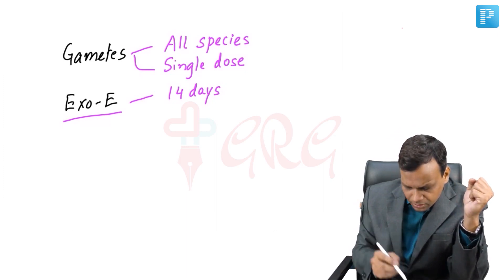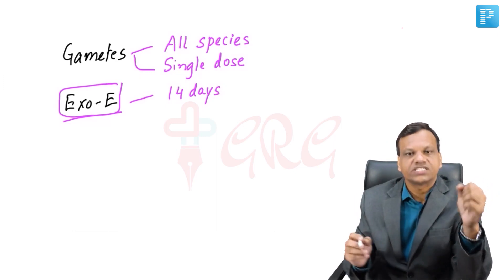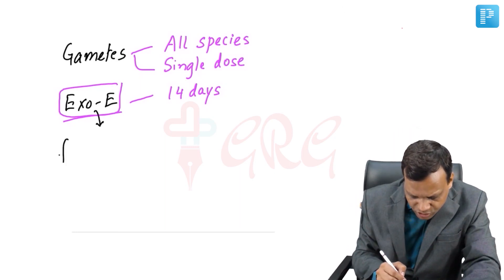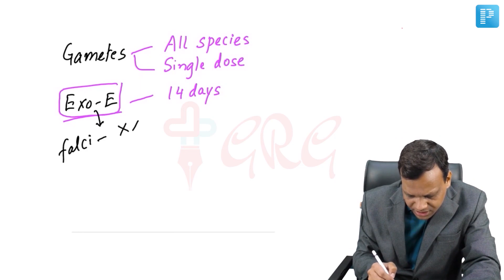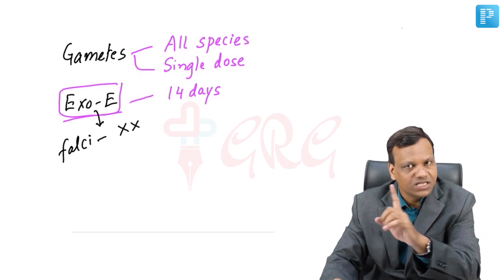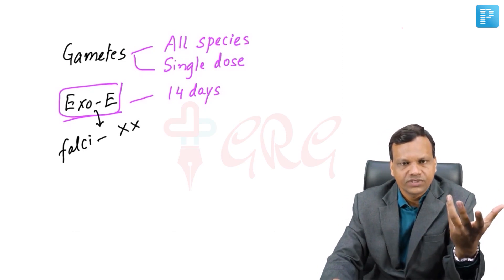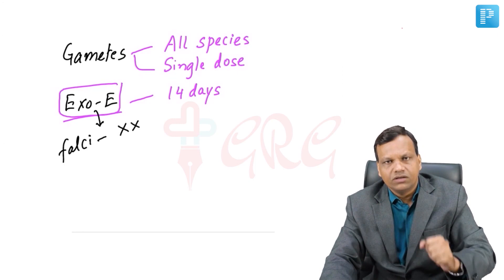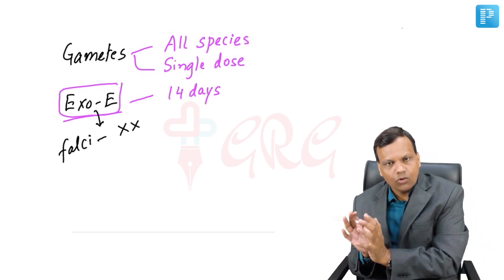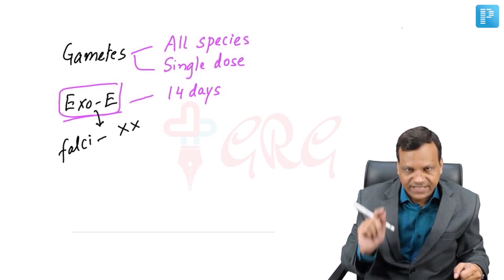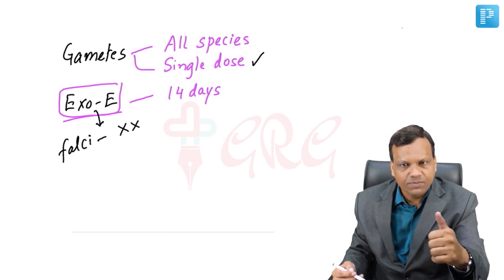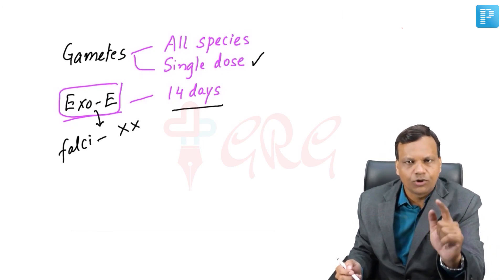Importantly, the exo-erythrocytic/hypnozoite stage is not present in all species. Plasmodium falciparum does not have an exo-erythrocytic stage, so falciparum malaria never shows relapse. Therefore, when primaquine is used for P. falciparum, it is only to kill the gametes — a single dose is sufficient. For P. vivax malaria, primaquine is given for 14 days to also eliminate the hypnozoites.